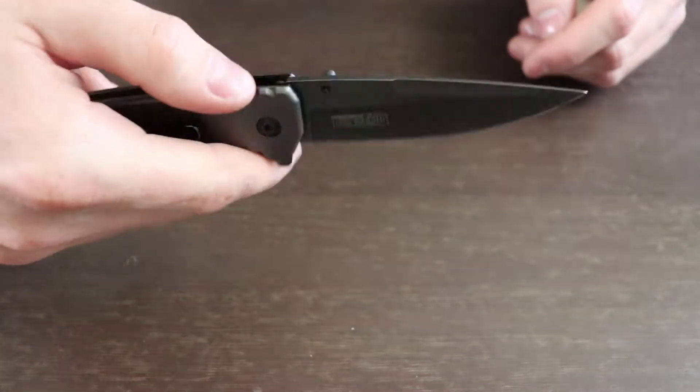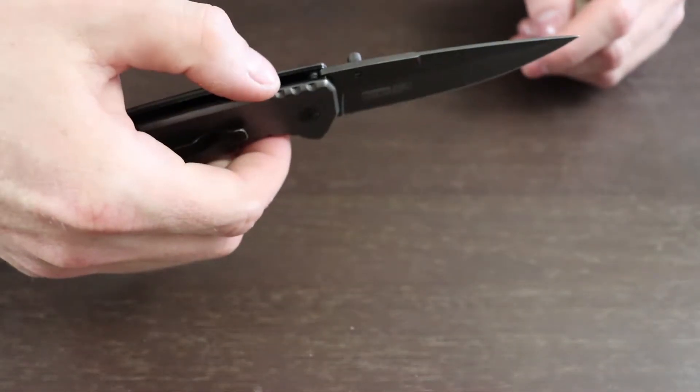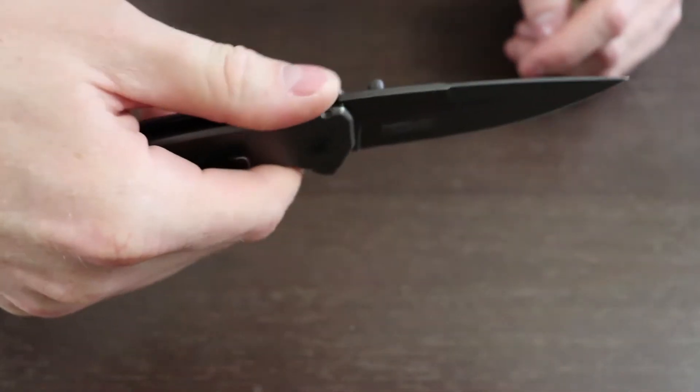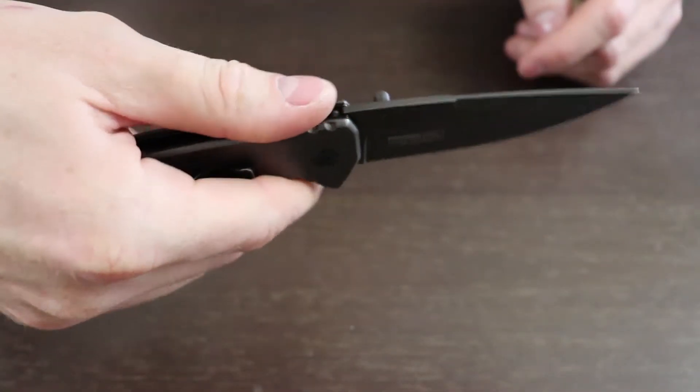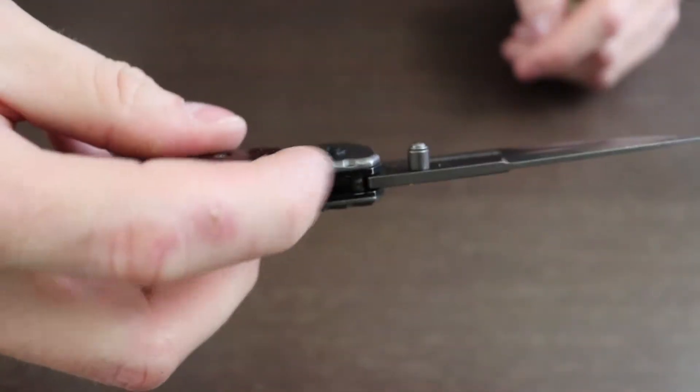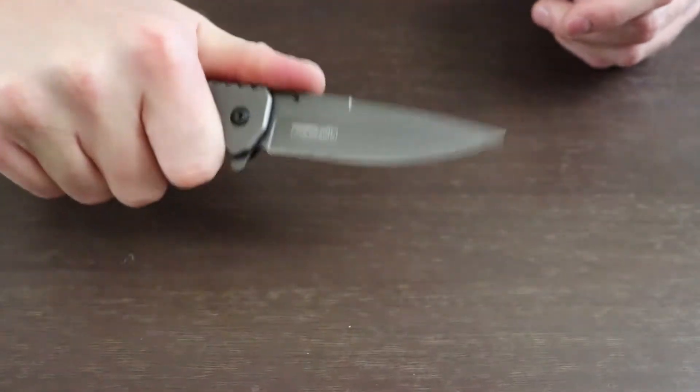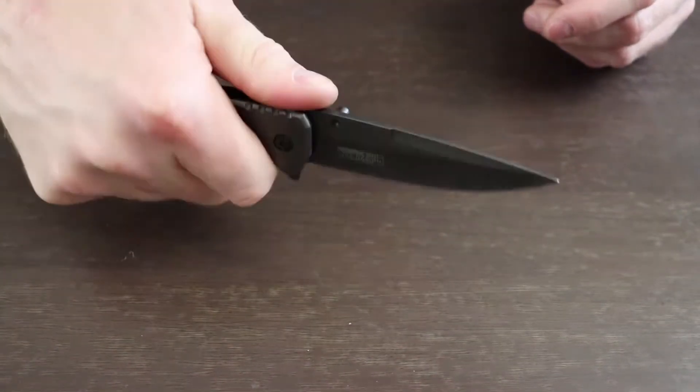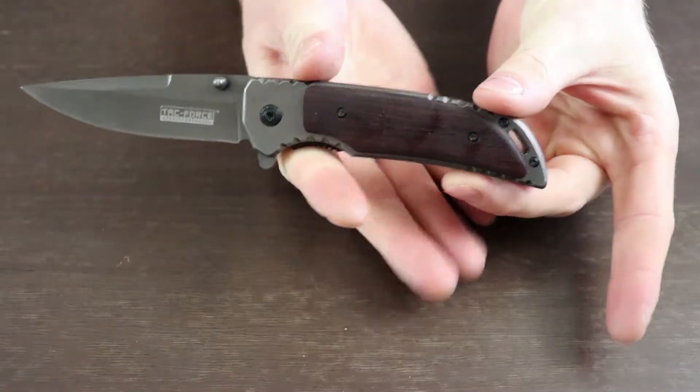Actually those are on the outside guys, there actually are none up here at the top. I know it kind of looks like my hands are going over them but it's not, it's all flat right up here. Yeah right there it's slipping a little bit but still not too bad of a knife.